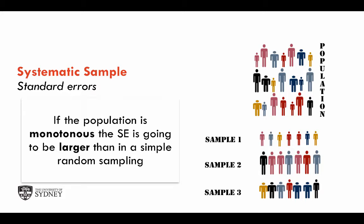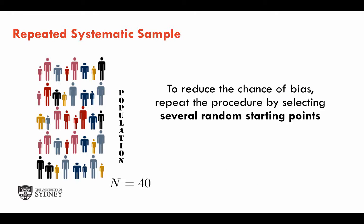So the standard error might be wrongly computed if we have a monotonous or ordered population. However, in practice, we will not know if the population is monotonous or ordered unless it is done by design. One way of dealing with this is to use a variation on systematic sampling called repeated systematic sampling.